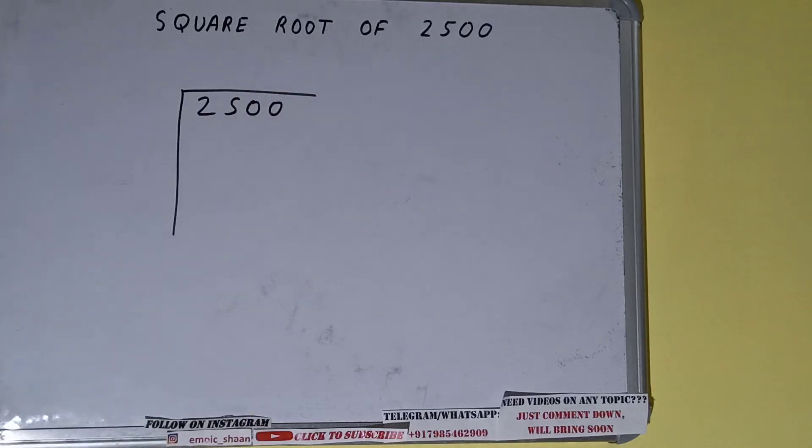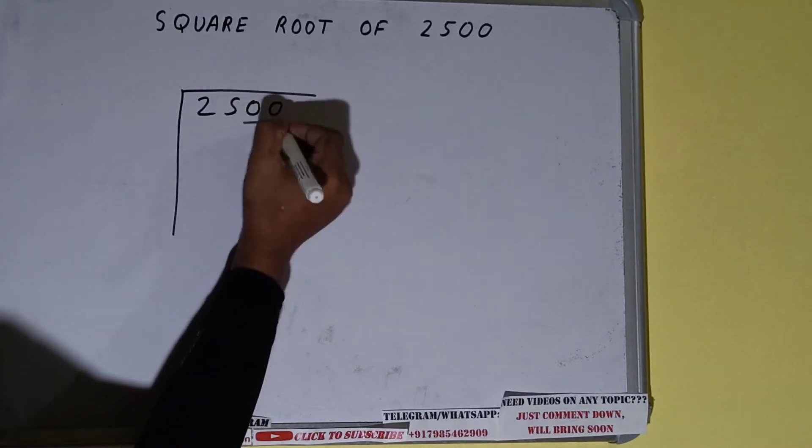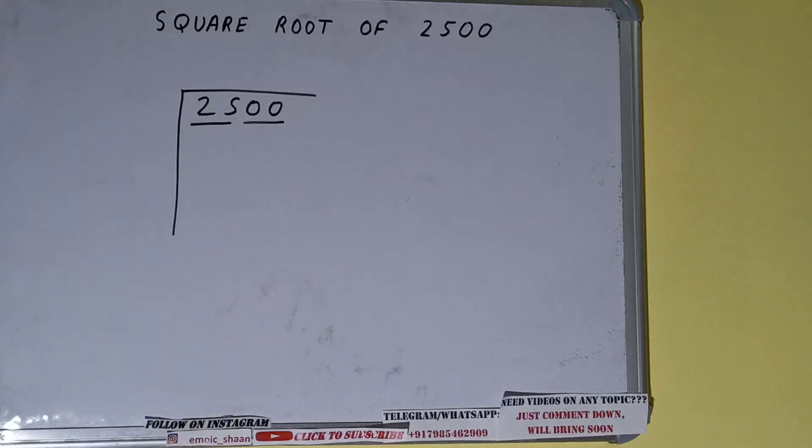The next thing we need to do is form pairs from the right-hand side. So one pair will be this and one pair will be this. Okay, first we'll divide this 25 and then we'll bring down the other pair.